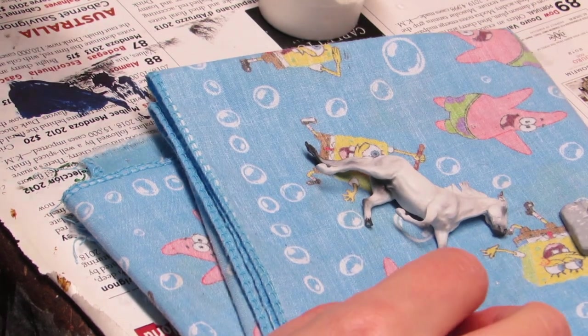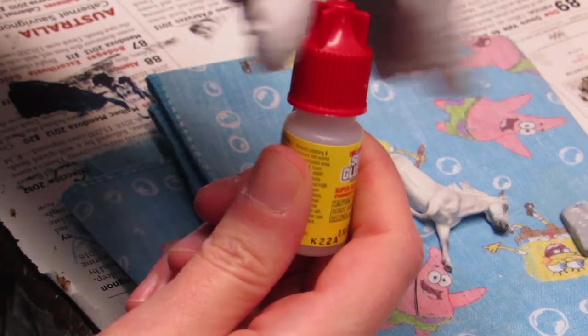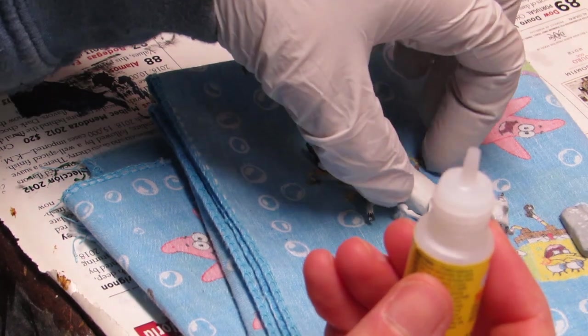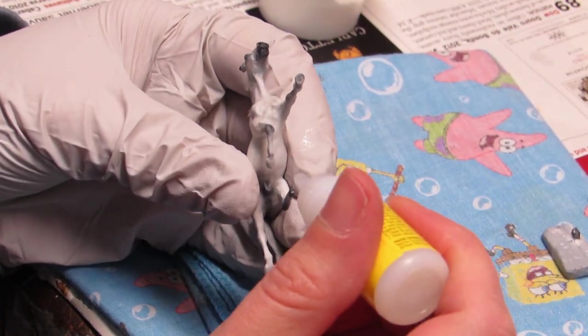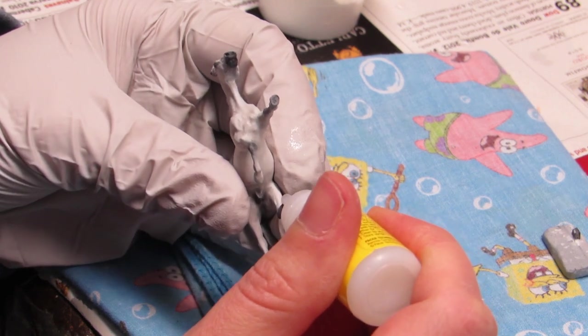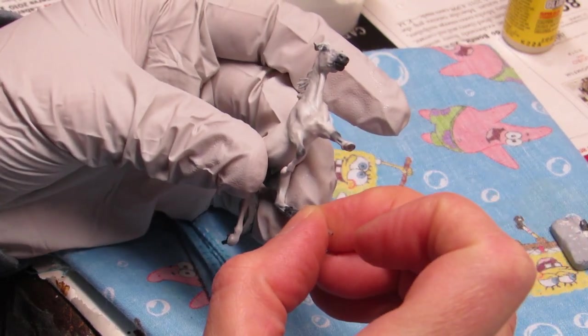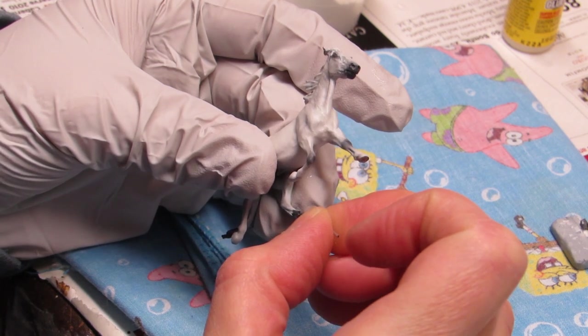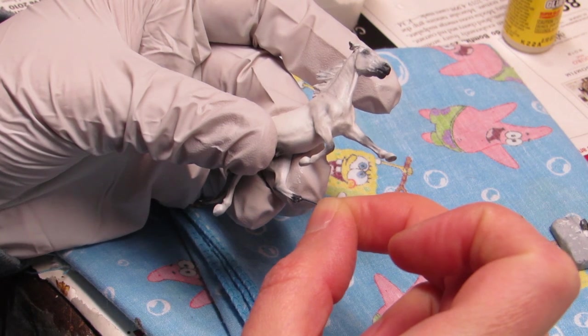So what we're going to do now, we're going to take our super glue. And remember, not the gel kind of superglue. The gel kind does not work here. And put a little drop in this end here. Try not to make a huge mess. And now we're going to take our wire. And we're just going to poke it in and out.